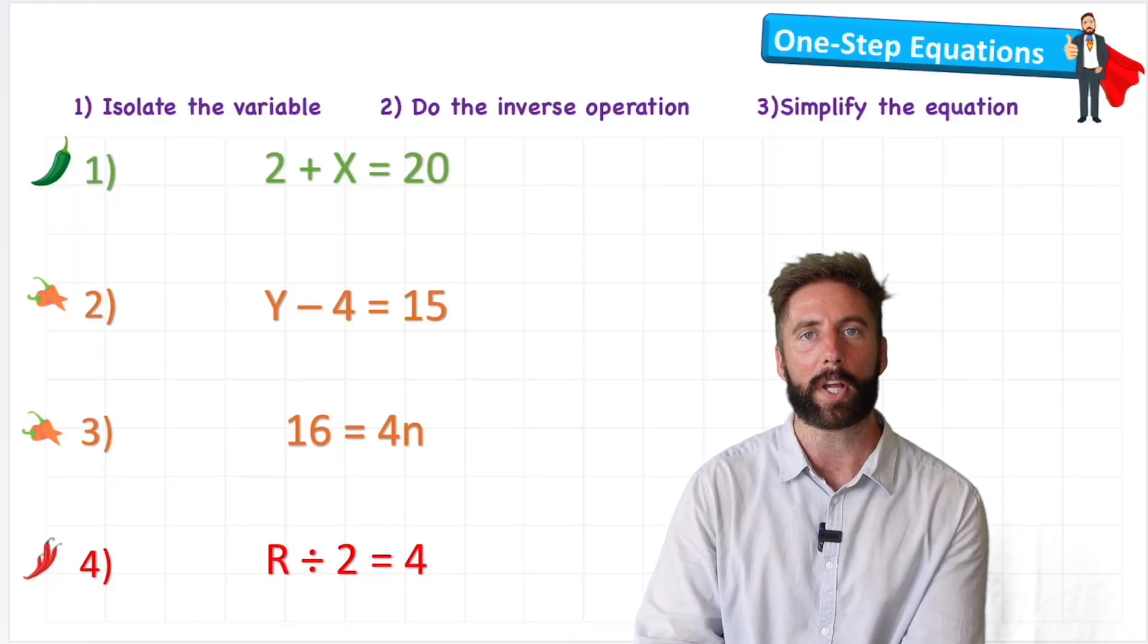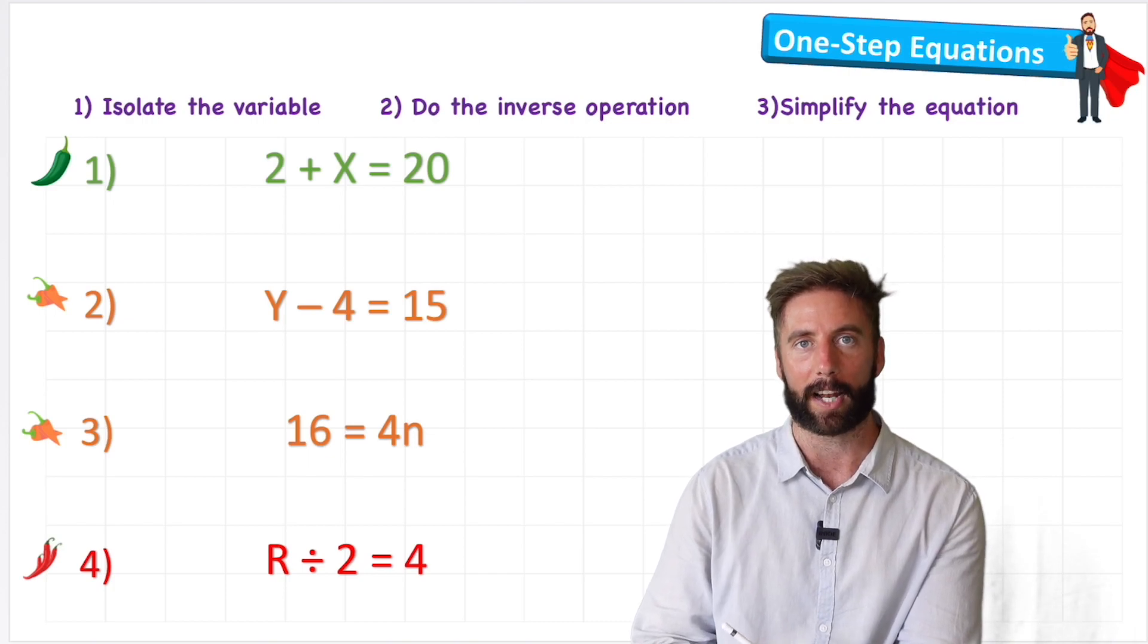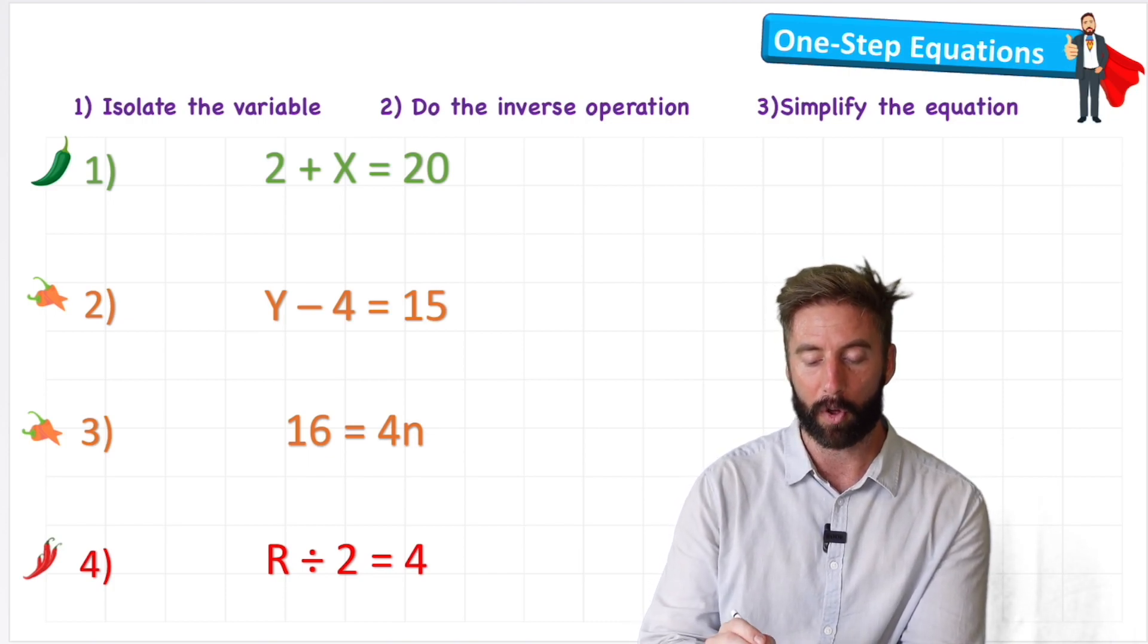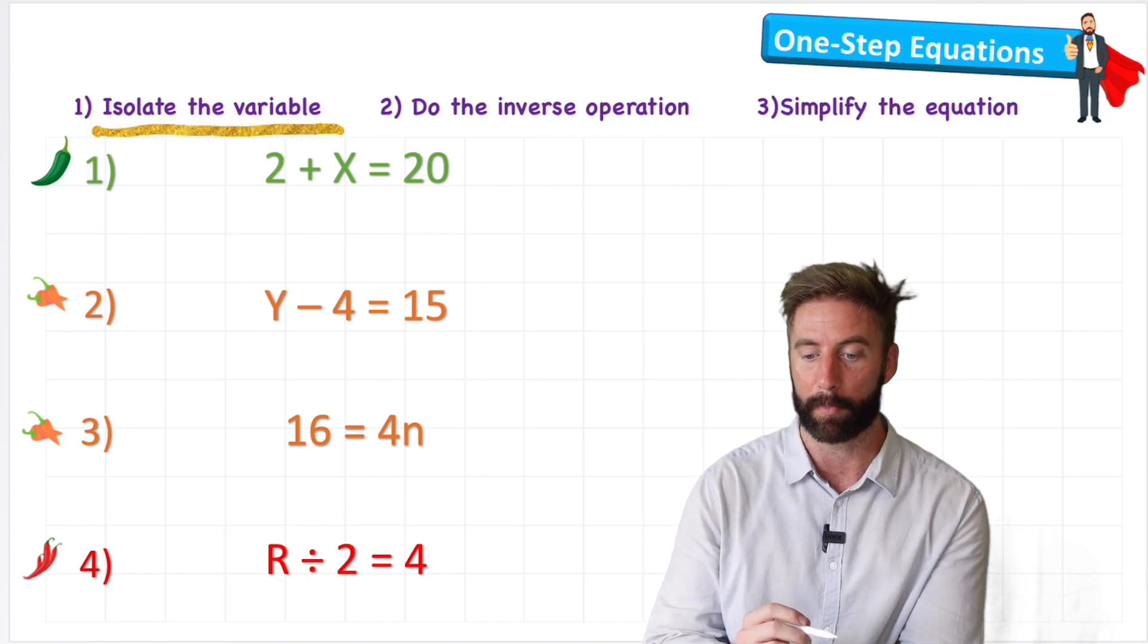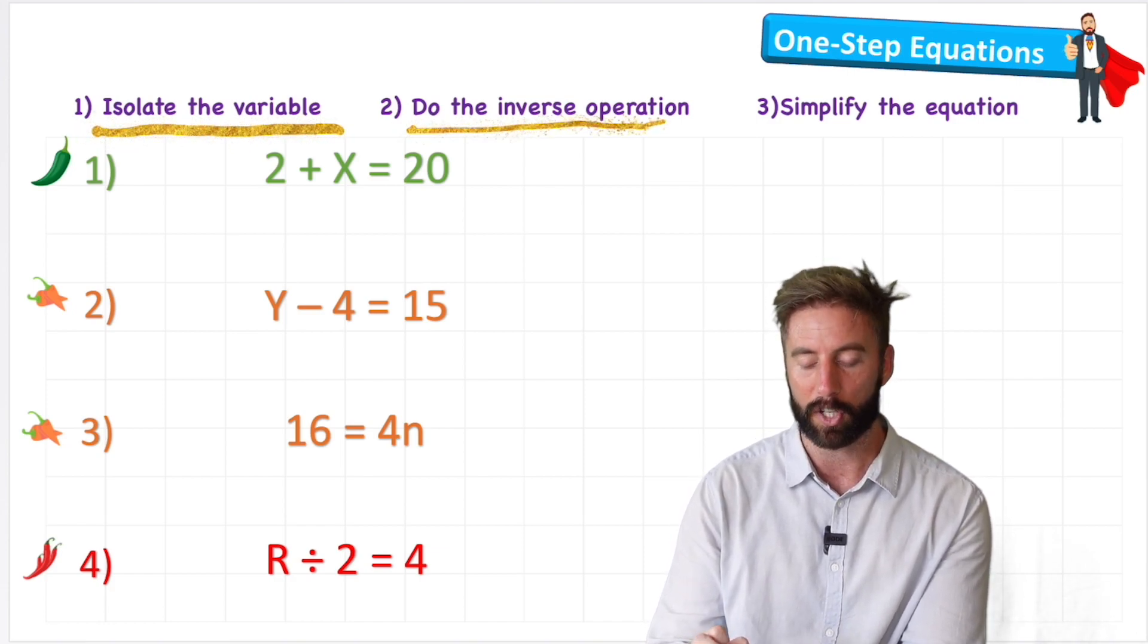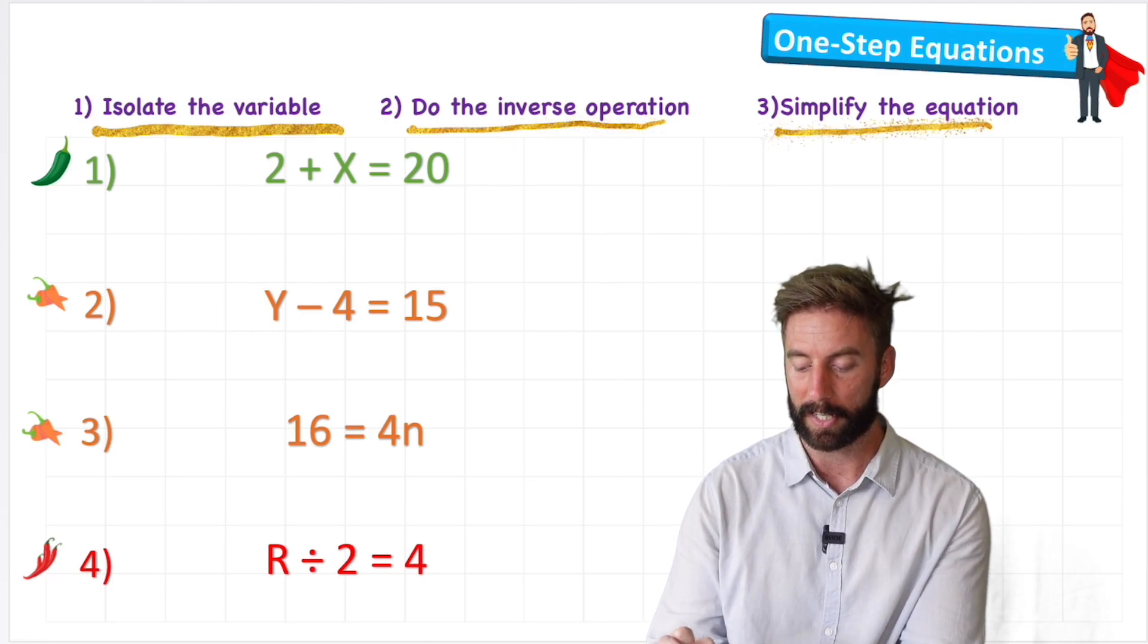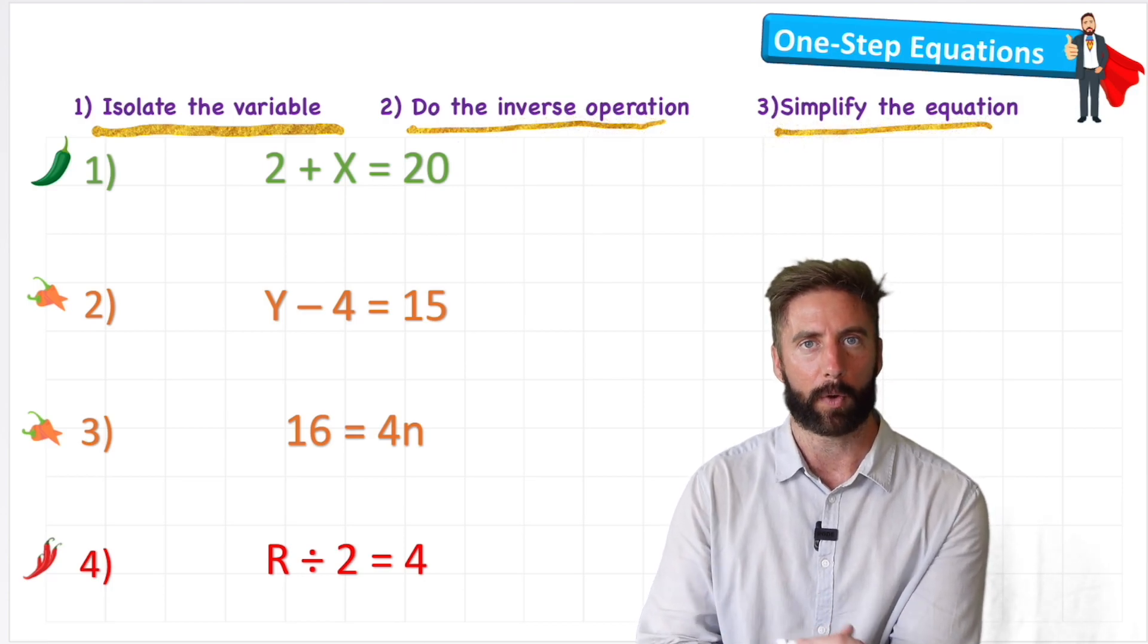Okay we've got these four questions that we're going to work on, they slowly get a little bit harder and we're going to try and follow these steps. First we're going to isolate the variable and understand what a variable is, then we're going to do the inverse operation before finally simplifying the equation or solving the equation.